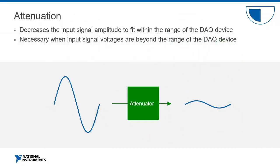Now let's talk about attenuation. Attenuation is the opposite of amplification, and is necessary when acquiring voltages beyond the digitizer input range of your DAQ device. This form of signal conditioning decreases the input signal amplitude so that the conditioned signal is within the range of your analog-to-digital converter — a key component of any DAQ device. Attenuation is necessary for measuring high voltages.